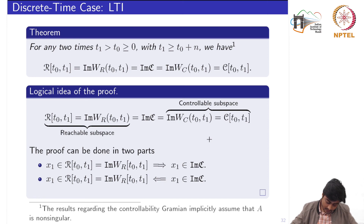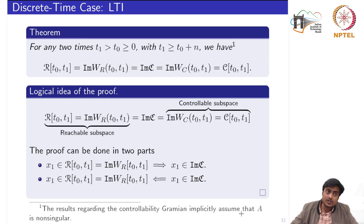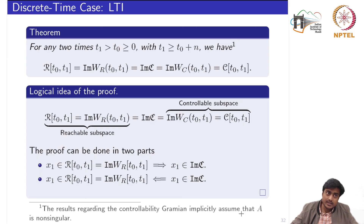Note that all the results discussed above involving the controllability Gramian implicitly assume that the matrix A is non-singular. This is because the controllability Gramian includes the backward computation of the state transition matrix, and that backward computation is only possible if the matrix A is non-singular for all time t — in the time-varying case, A must be non-singular at each time step.